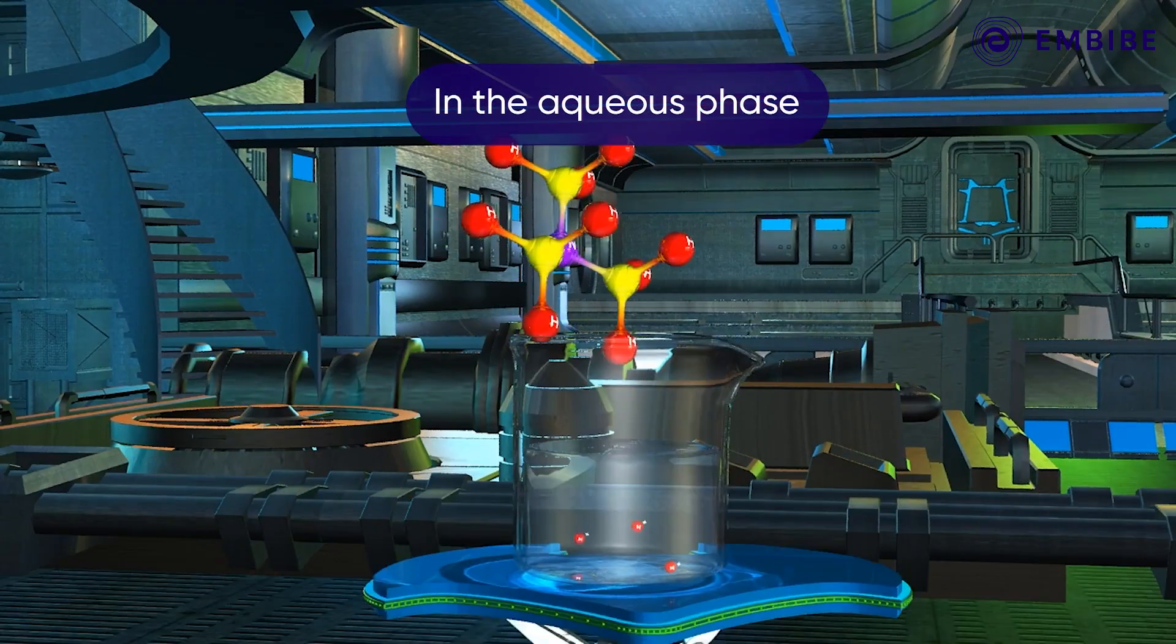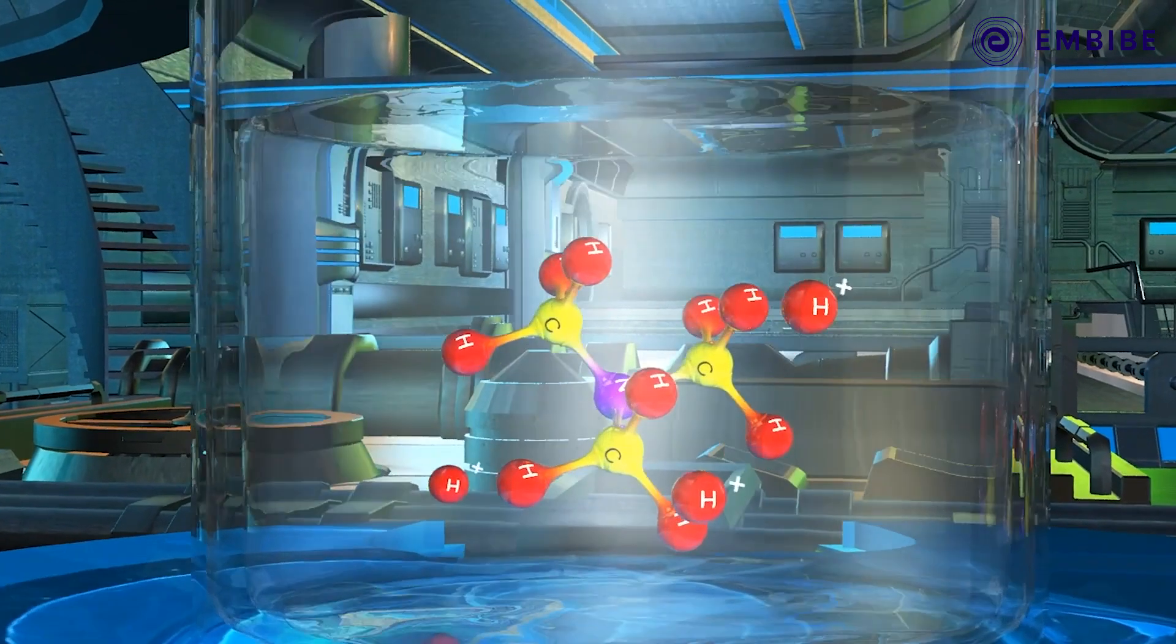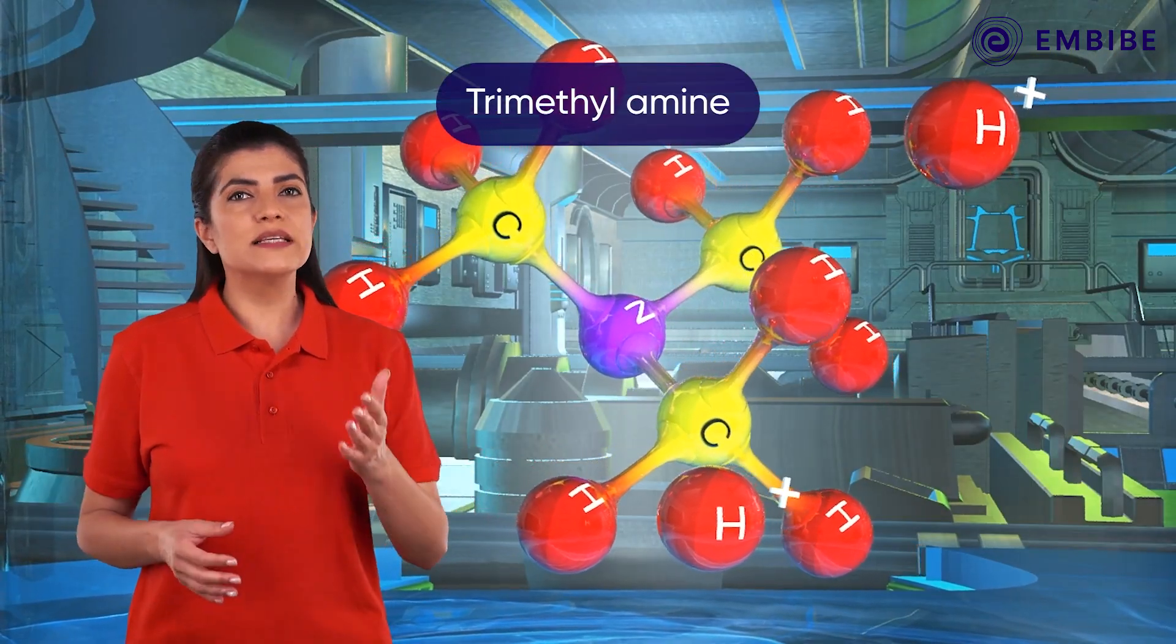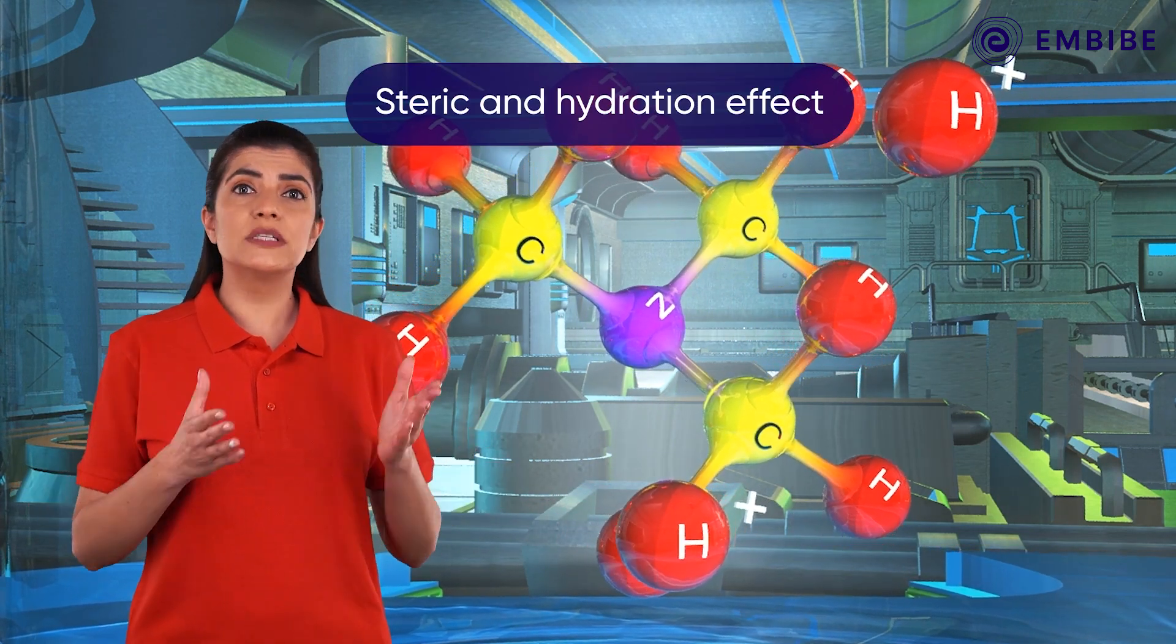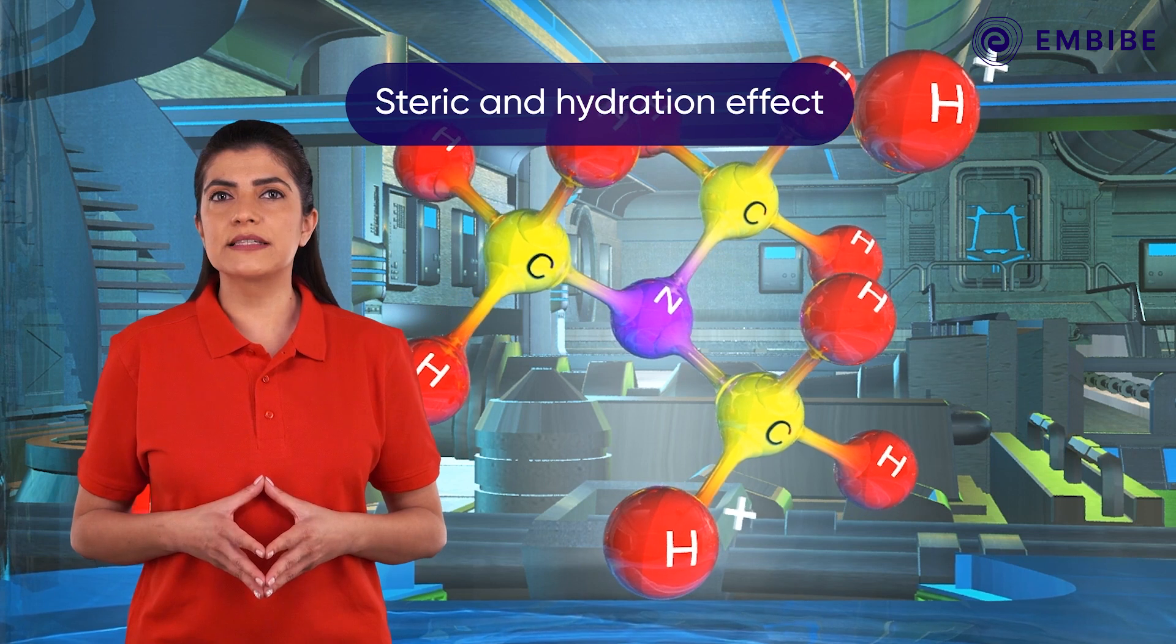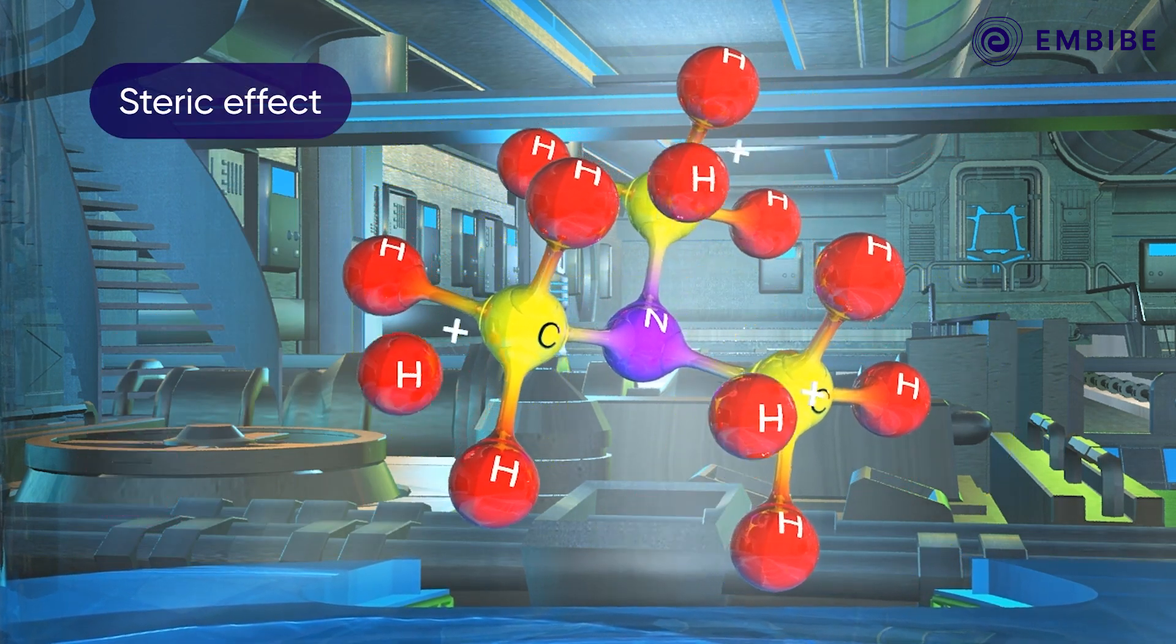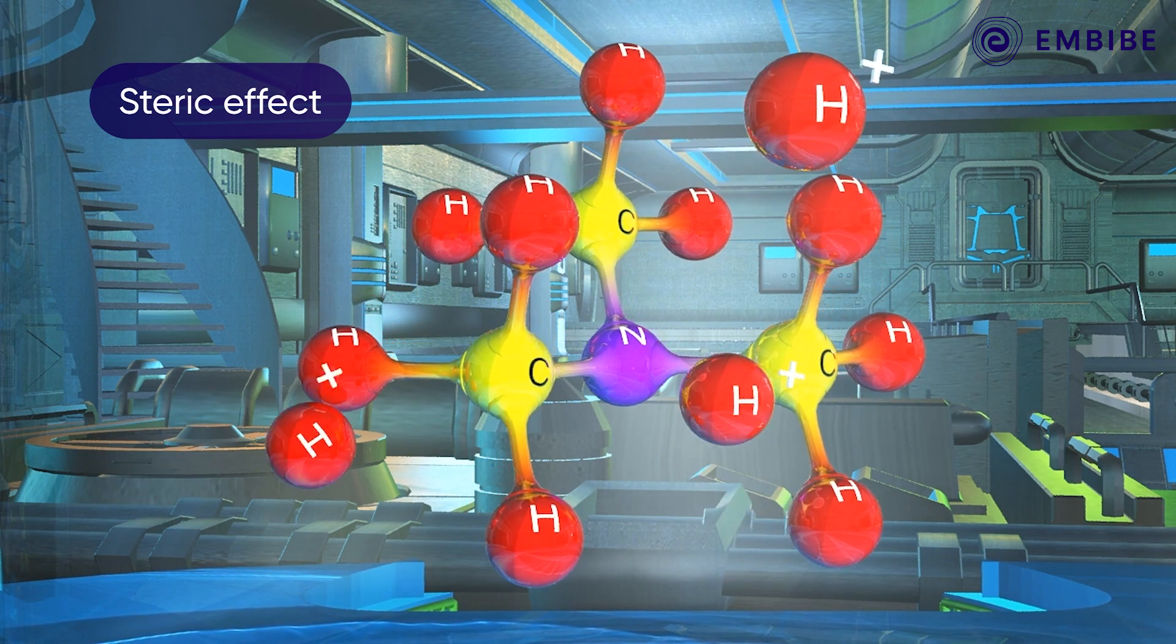However, in the aqueous phase, the order of basicity changes. Trimethylamine or tertiary amine is a weaker base than a primary amine. This is due to steric and hydration effects. The steric effect refers to the crowding of methyl groups around the nitrogen atom, which hinders the attack of proton on the amine molecule.